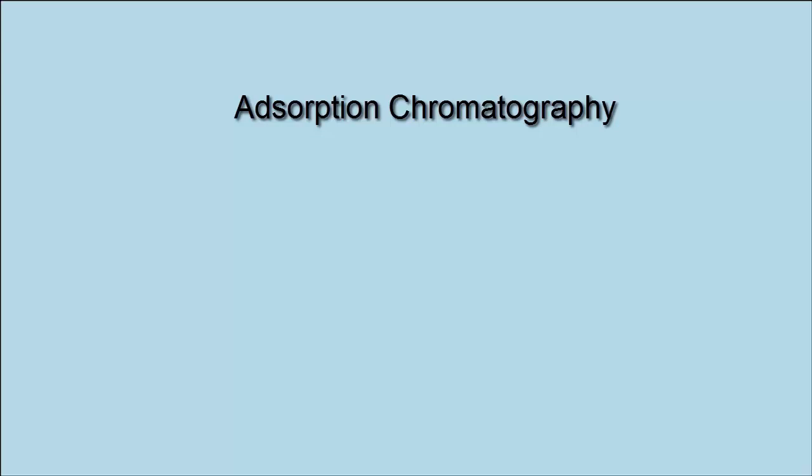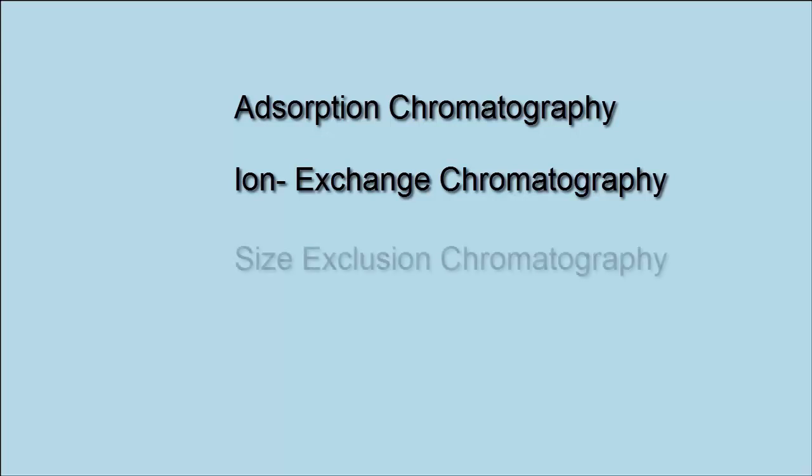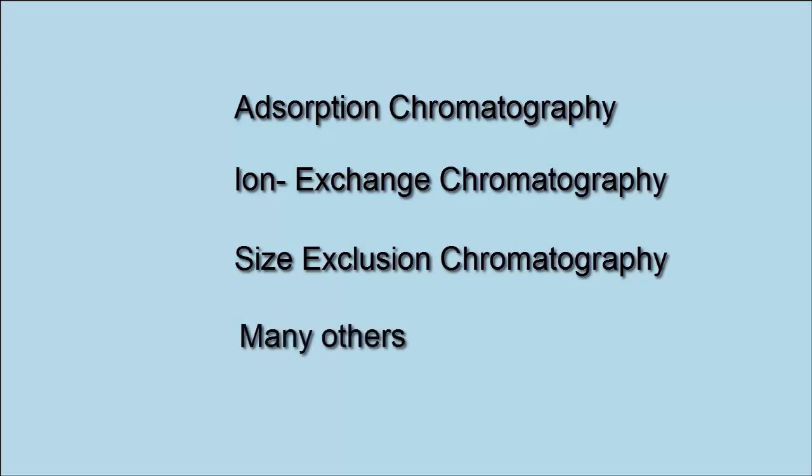But there are other interactions that can lead to the same type of separations. For instance, some people would use ion exchange resins to separate chemicals that have different charges. Some people have stationary phases that have cavities in them of a certain size, which will hold on to certain types of molecules better than others based upon their size. So there are different types of chromatography out there that take advantage of different types of properties. And adsorption chromatography is what we've discussed in this video, but it is not the only one.